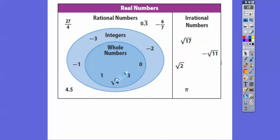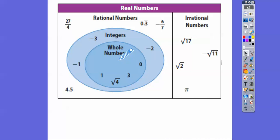The square root of 4 is actually 2, so that goes in the whole numbers. The whole numbers start at zero. Natural numbers would be included in the whole numbers right here.